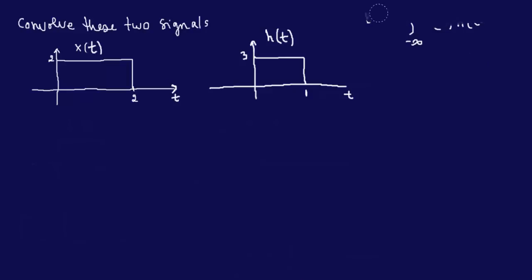The two biggest issues students have with convolution are: first, which signal do I flip? — because you're given two signals and you need to flip one of them. Second, how do I find the limits? How much do I shift, and how do I determine those limits? We're going to address both of those.